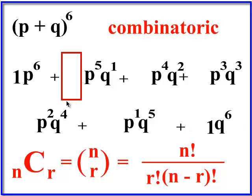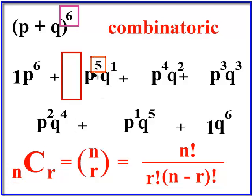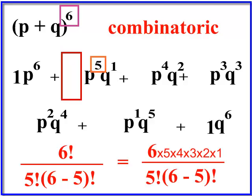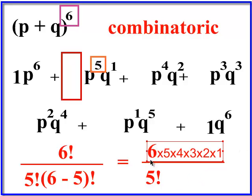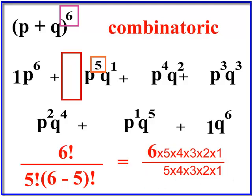Let's do a couple examples. For the second term, your n is always the power of the original binomial, so it's always going to be six choose something. What we choose is the exponent of the p — you could choose the q and get the exact same answer, but I'll stick to the p. So we do six choose five: six factorial over five factorial times one factorial. One factorial is just one. Everything on the bottom cancels, leaving just six on top — so the coefficient is six.